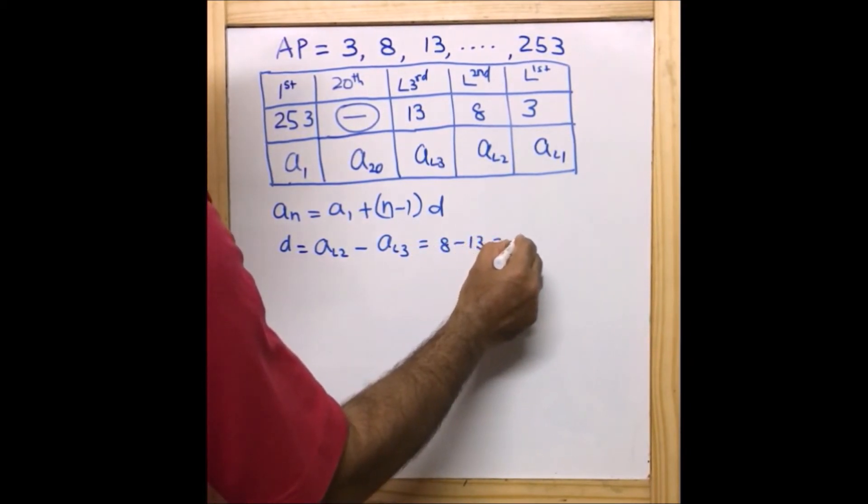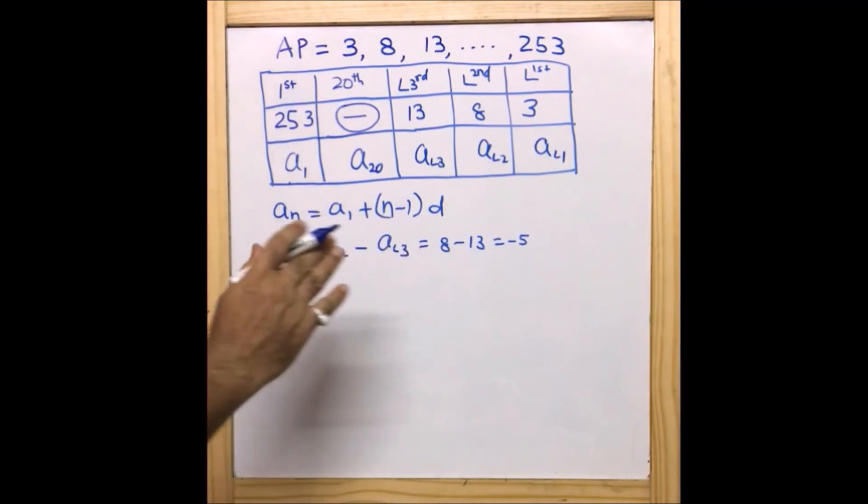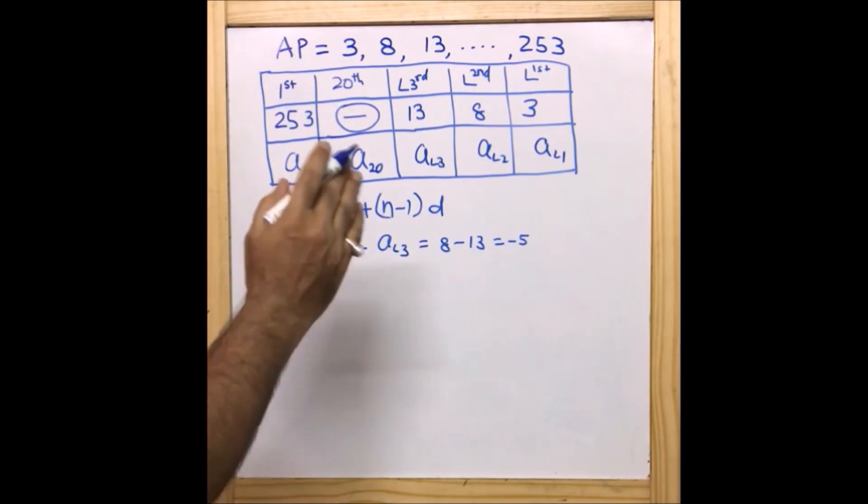That is equal to -5. So we got the common difference is 8 - 13 which is nothing but -5.